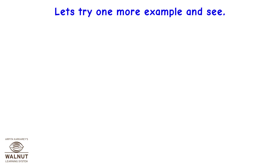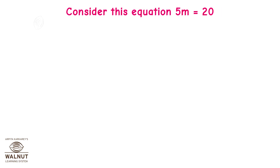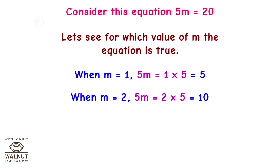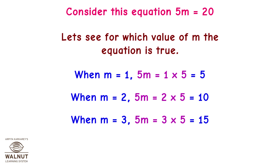Let's try one more example. Consider this equation: 5m is equal to 20. Let's see for which value of m the equation is true. When m equals 1, 5m equals 5. When m equals 2, 5m equals 10. When m equals 3, 5m equals 15. When m equals 4, 5m equals 20.